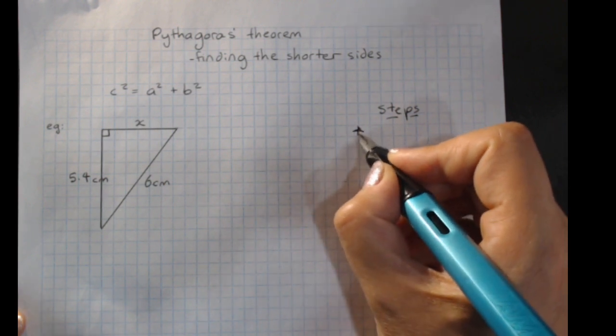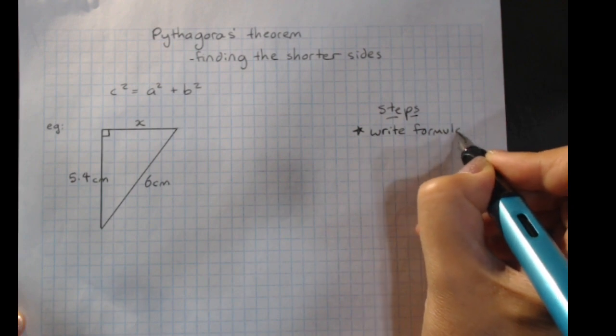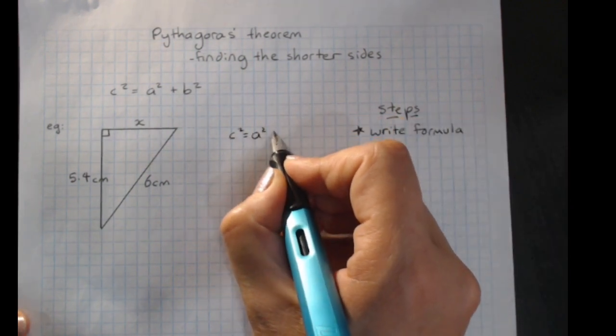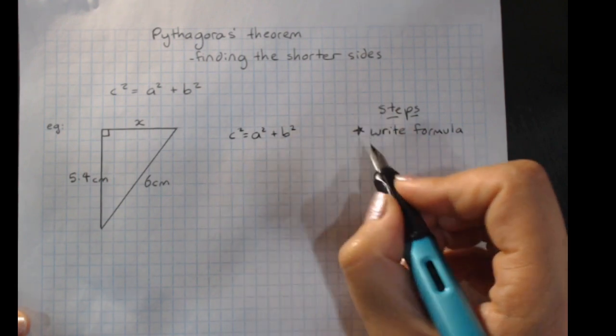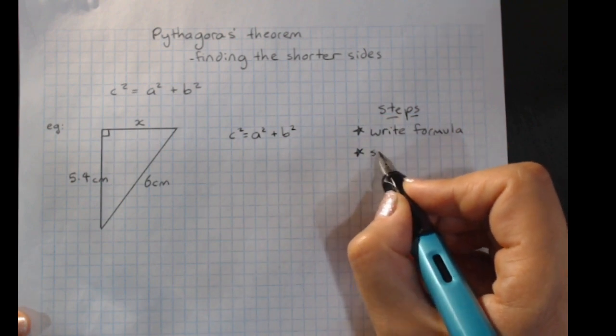We always still write the formula. So we're going to write c squared equals a squared plus b squared. And every time we've written a formula, we substitute in the values we know.